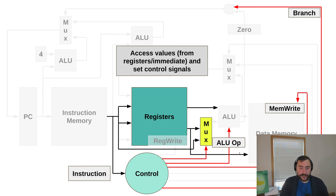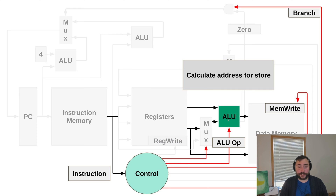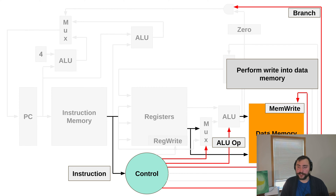You can see some of the control signals we have set. We have our ALU op to say what we want our ALU to do, and then also telling our memory we want to do a write. We also have a signal that says whether or not we're doing a branch — and we're not in this case. From there, we actually do our calculations, calculating the address for our store. That gives us our address to pass to data memory, along with our register result being forwarded, and then we eventually do our write — memwrite control signal is set, we have our address and our data, so we do our write into memory.